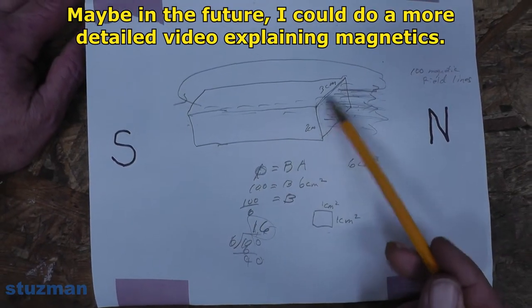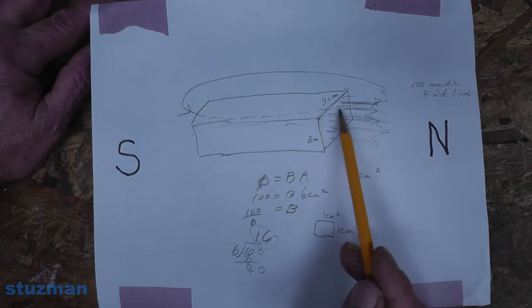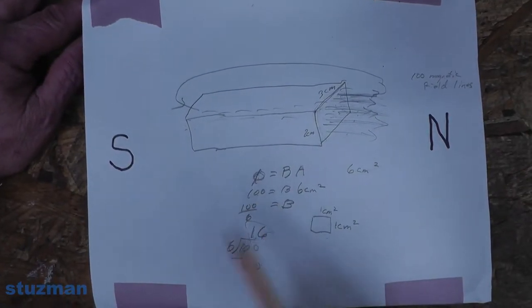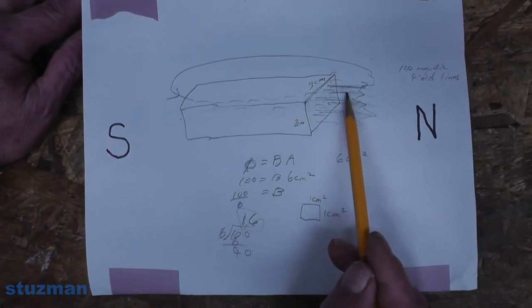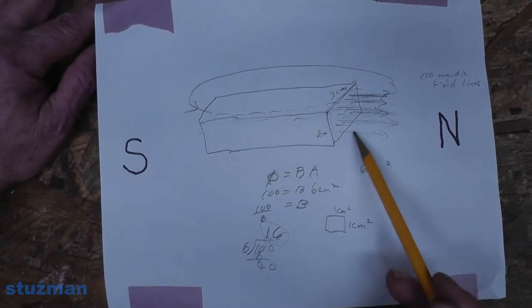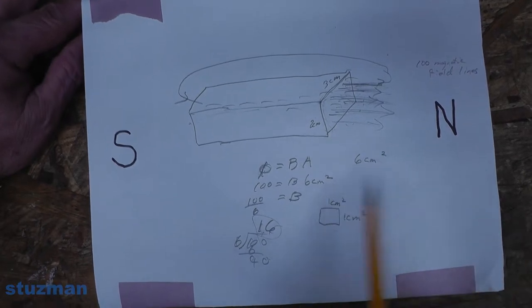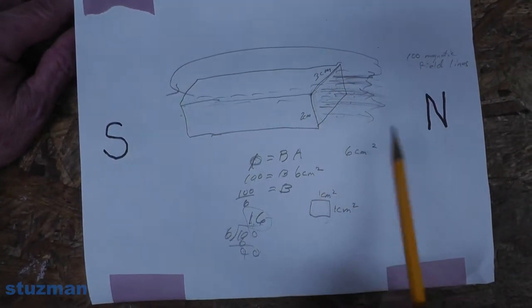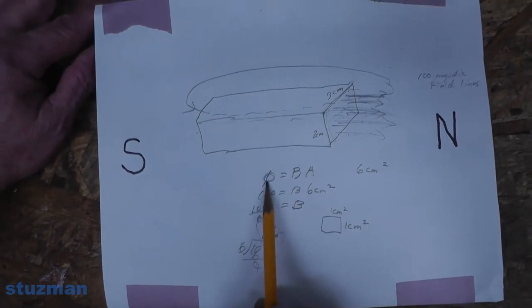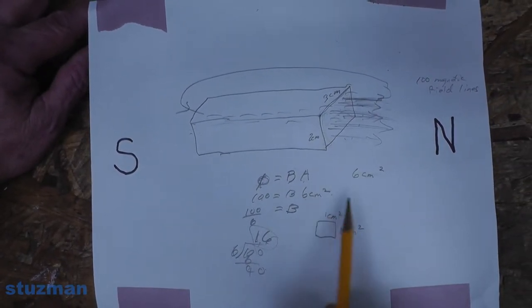If I have a bar magnet that's 3 centimeters across and 2 centimeters deep, the area of the pole is 6 square centimeters. The magnetic field lines are coming out in this direction, wrapping around to the south, continuing through the magnet, and out to the north again. Each one of these lines is called a Maxwell — one magnetic field line equals one Maxwell. If I had 100 of them coming out, that's 100 Maxwell. All of these together we call magnetic flux. Magnetic flux (phi) equals B, the magnetic flux density, times the area.